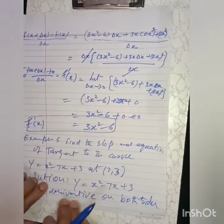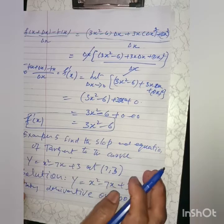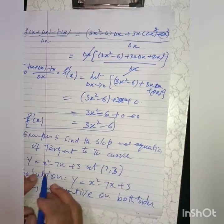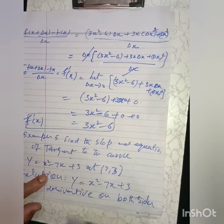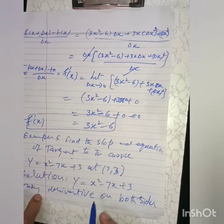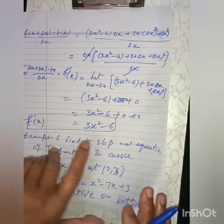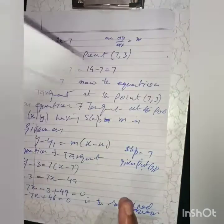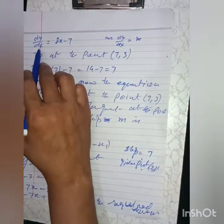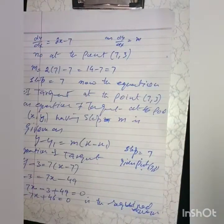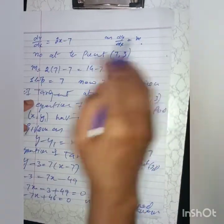Now there is another example: find the slope and equation of the tangent to the curve y = x² - 7x + 3 at the point (7, 3). Solution: y = x² - 7x + 3. Taking the derivative on both sides, dy/dx = 2x - 7. Since dy/dx equals the slope m, we have m = 2x - 7.